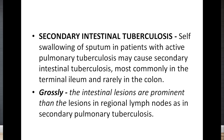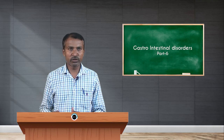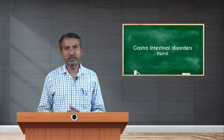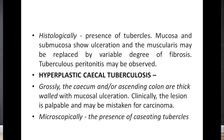In case of secondary intestinal tuberculosis, swallowing of sputum in patients with active pulmonary tuberculosis may cause secondary intestinal tuberculosis, most commonly in the terminal ileum and rarely in the colon. Grossly, the intestinal lesions are more prominent than the lesions in regional lymph nodes. Histologically, tubercles are present; mucosa and submucosa show ulceration, and the muscularis may be replaced by variable degree of fibrosis.